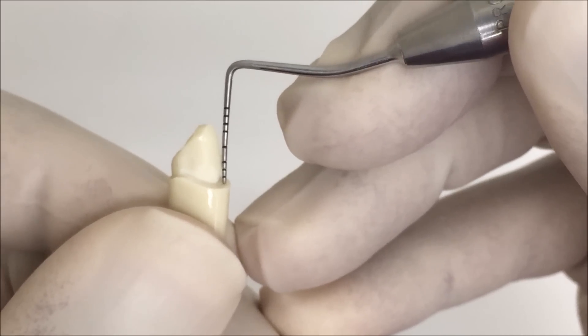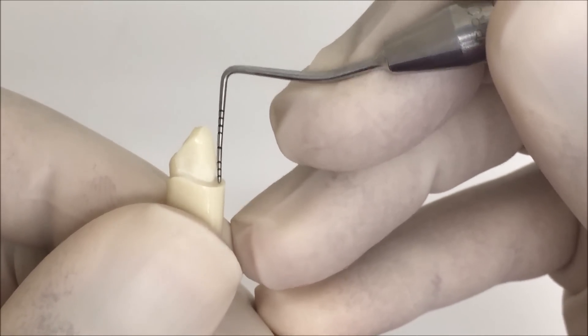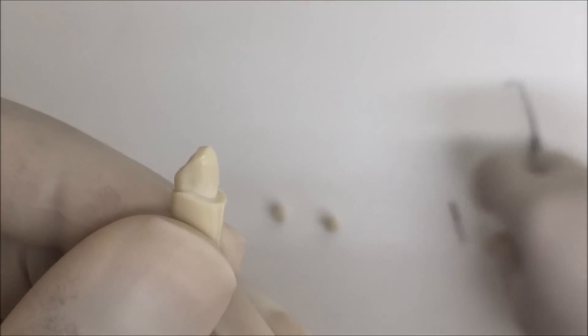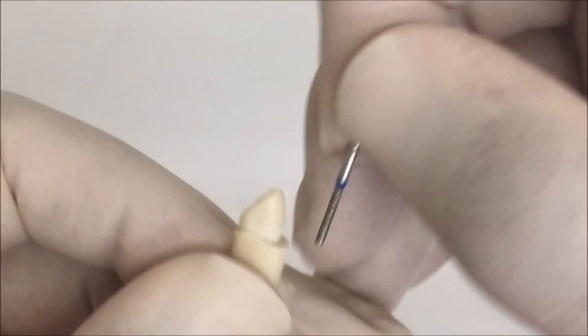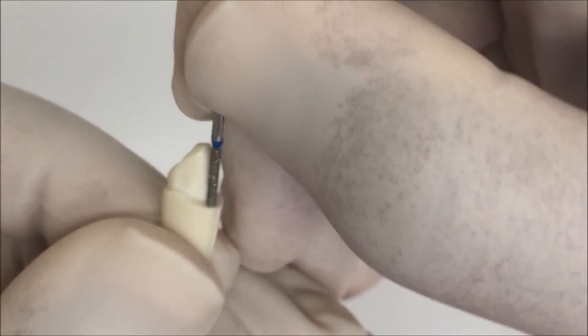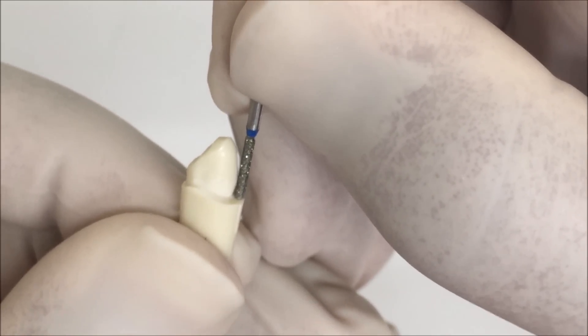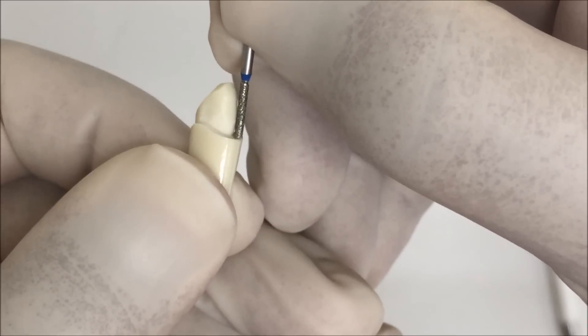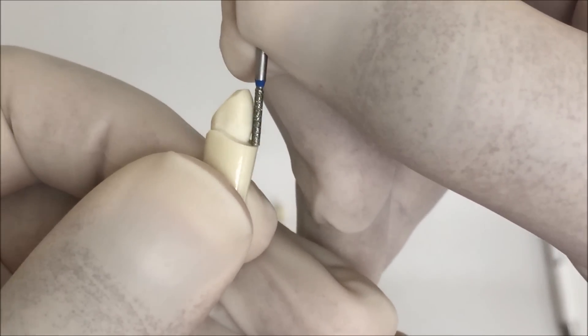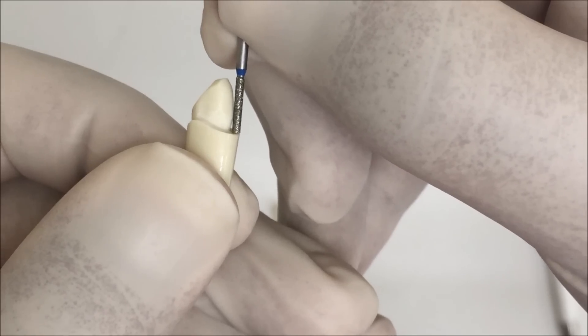Also, you can put the bur that you are using, just try to put it parallel to the surface on the margin, and you will get that triangle I am talking about. You can see it's obvious here.